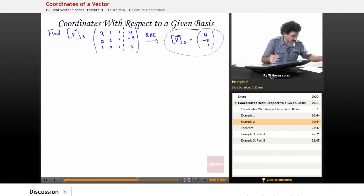Now, what we want to do is check: does 4, negative 5, 1 equal that transition matrix times the coordinate vector?